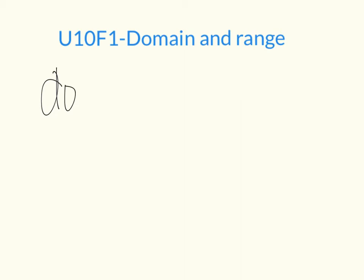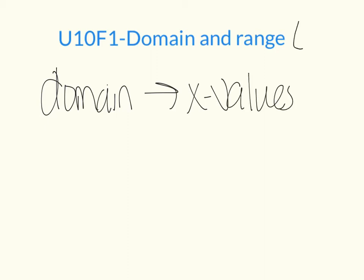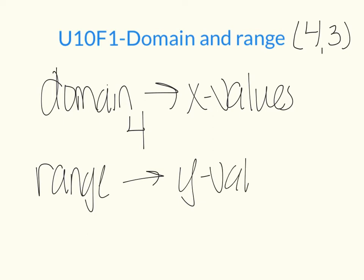Domain is going to be our x values in a point. So if we had a point, like on a graph, like 4, 3, the 4 is the domain, which is x value. The range is going to be the y value. In this case, it would be a 3.